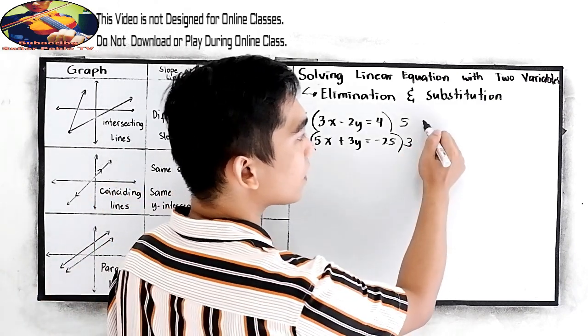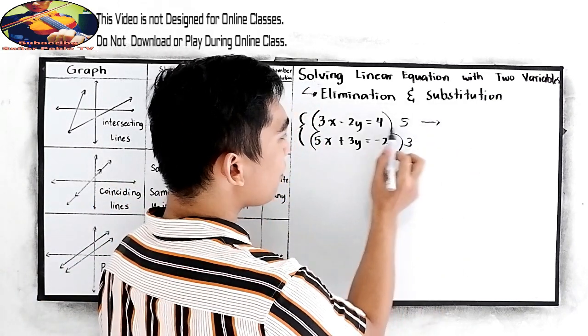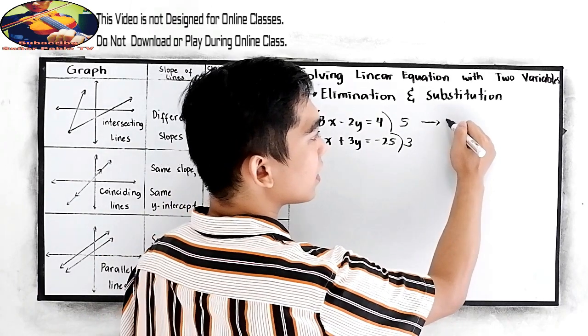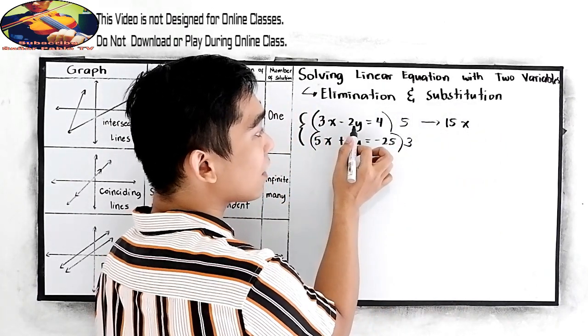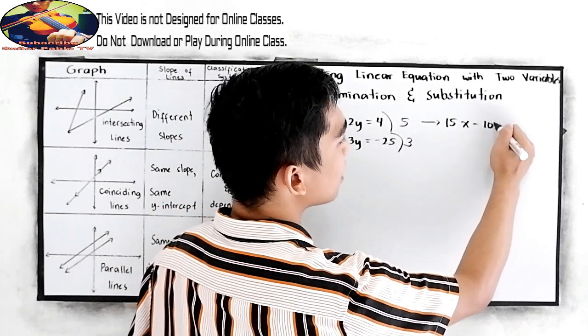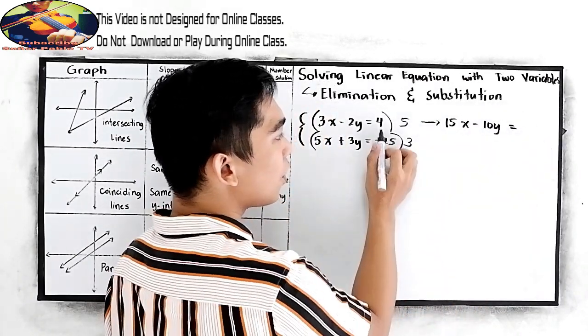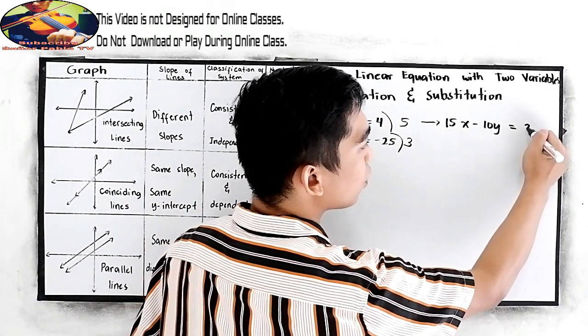Okay, let's do that. So 5 times 3x is 15x. 5 times negative 2y, negative 10y is equal to 4 times 5, 20.